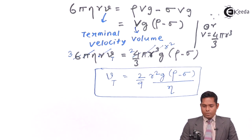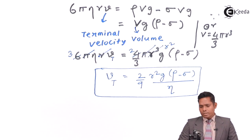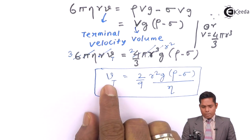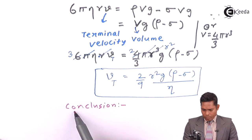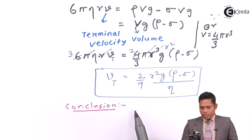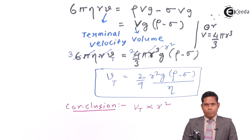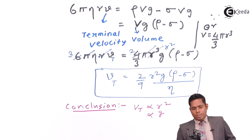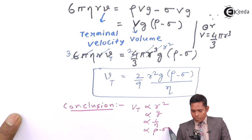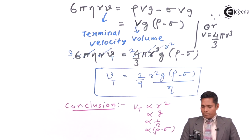This is the final expression for terminal velocity of a solid sphere moving through a fluid medium: Vt = (2/9)r²g(ρ − σ)/η. From this expression, we note that terminal velocity is proportional to the square of the radius — doubling the radius makes terminal velocity four times greater. It is inversely proportional to viscosity η, and directly proportional to the difference in densities of the object and the fluid medium.